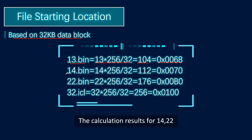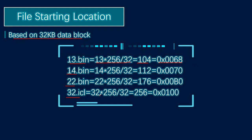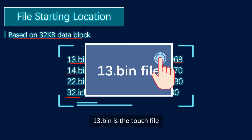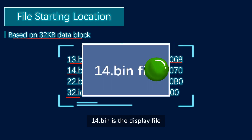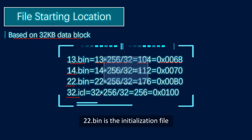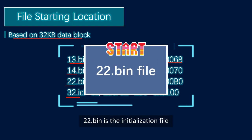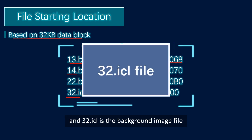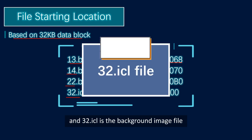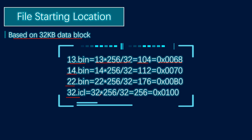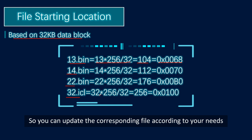The calculation results for the 14, 22, and 32 files are similar. As we've learned before: 13.bin is the touch file, 14.bin is the display file, 22.bin is the initialization file, and 32.ICL is the background image file. So you can update the corresponding file according to your needs.